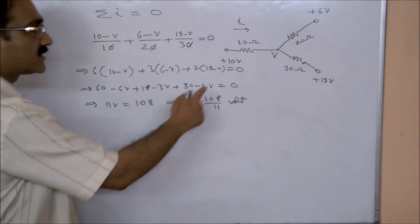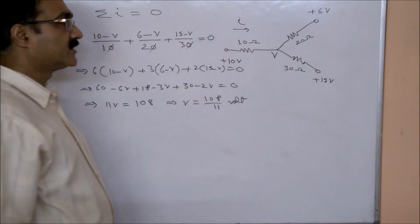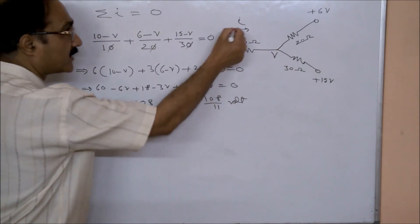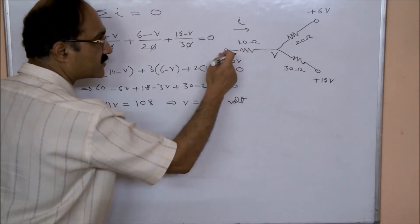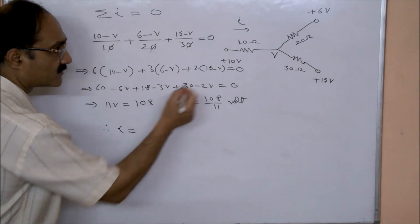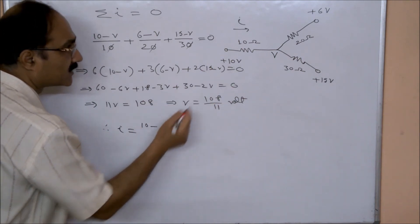So see, once I have found out the potential of this point, therefore the current I will be the potential difference, so this will be (10 - 108/11) divided by resistance, which is 10 ohms.